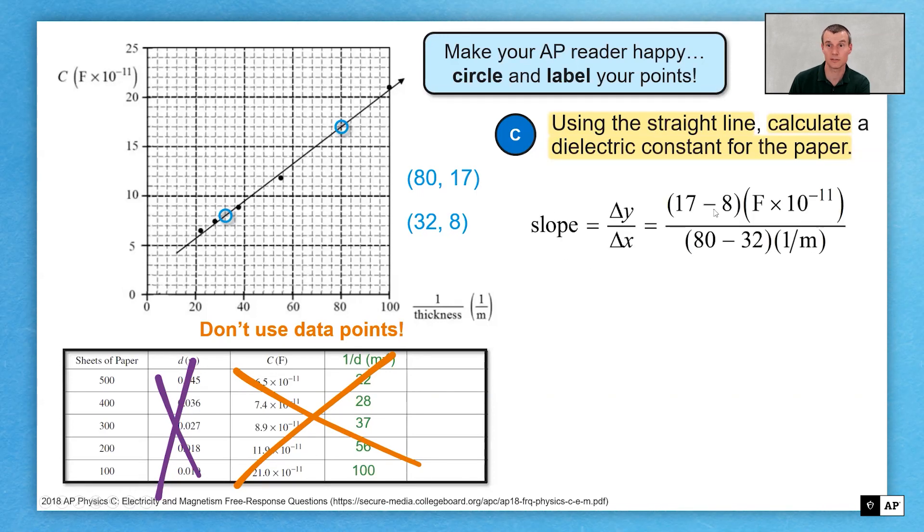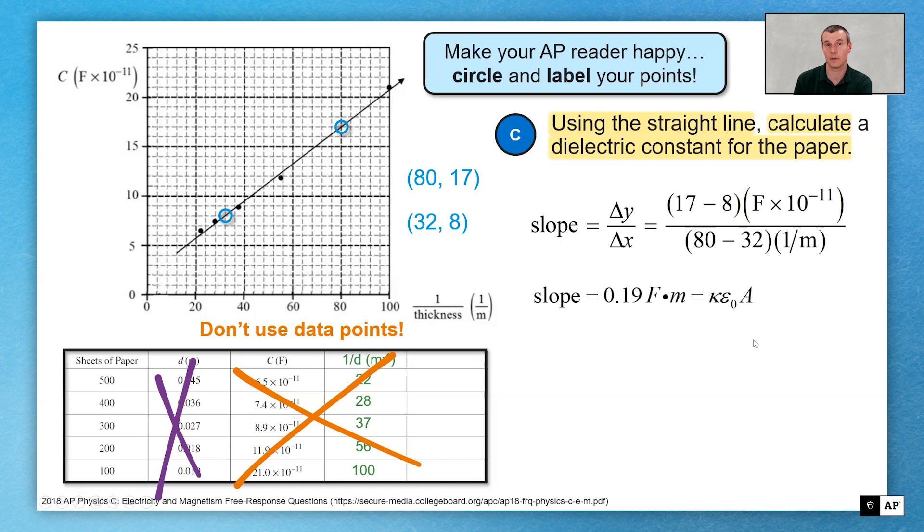That said, I'm looking at slope. So I'm doing my rise over run for my values. I take the actual value of the slope and I recognize that the slope is equal to what I had on that first slide, that kappa epsilon not A.